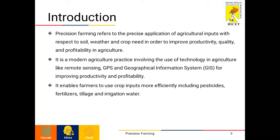Precision farming refers to the precise application of agricultural inputs with respect to soil, weather and crop need in order to improve the productivity, quality and profitability in agriculture.